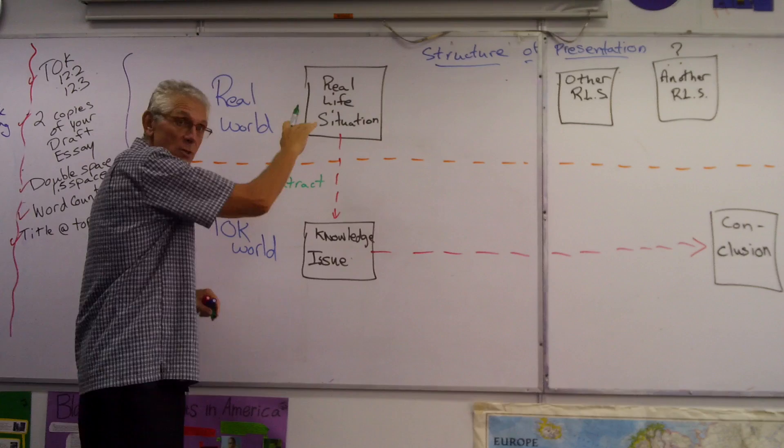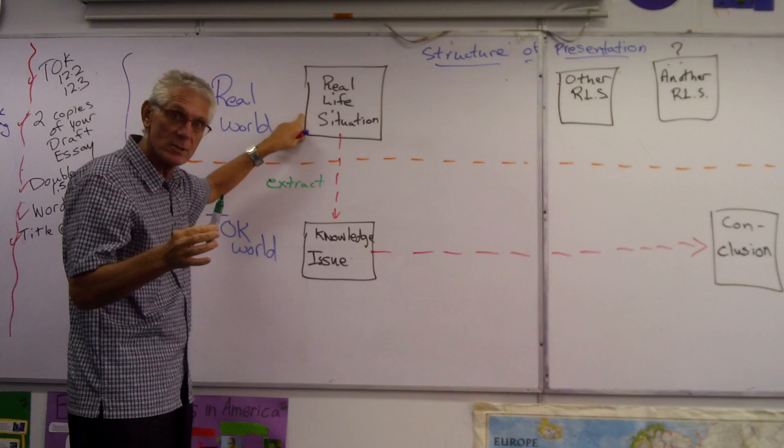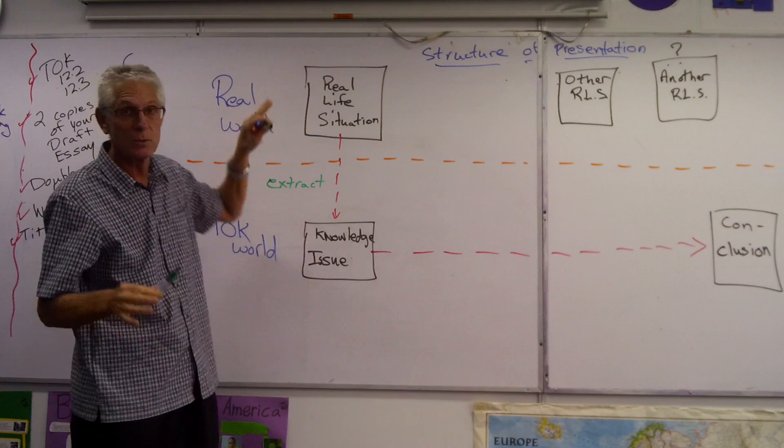This is Criteria A on your marking — it should be easy money if you do this well. You take a real-life situation and you outline briefly what it is to the audience, then go through your thinking to come up with your knowledge issue. So for example: